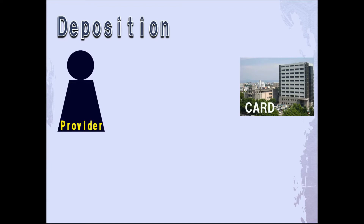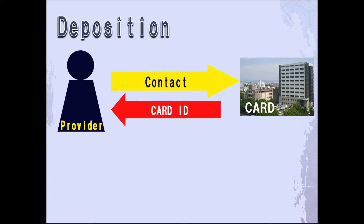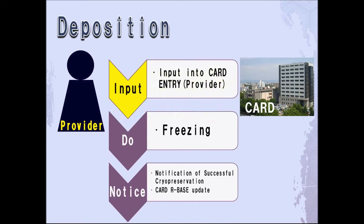First, let's look at the application procedure for deposition. The provider should contact CARD and inform us of the strain name and their division. CARD will contact the provider to pass on details of their CARD ID. Thereafter, CARD will explain how to input the CARD entry and how to send mice to CARD. After cryopreservation has been carried out, a notification of successful cryopreservation will be sent to the provider, while information regarding the mouse strain will be updated in CARD R-Base.